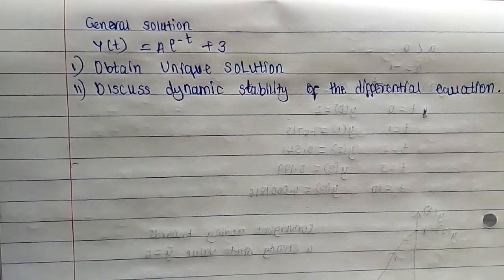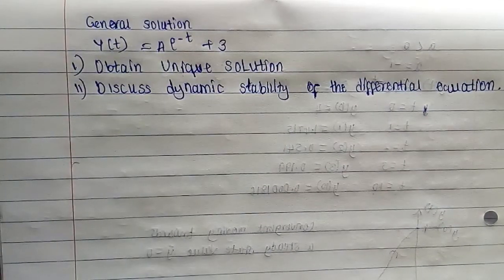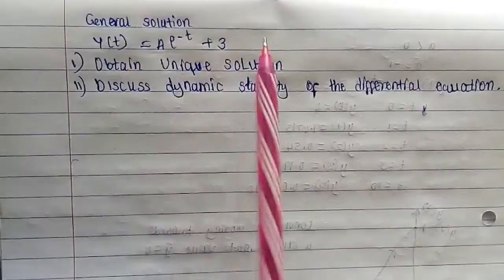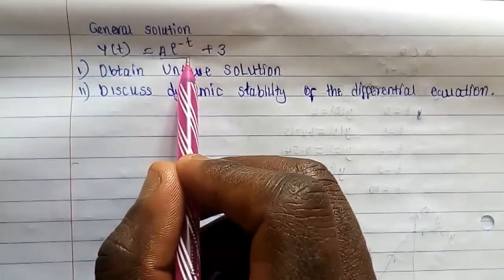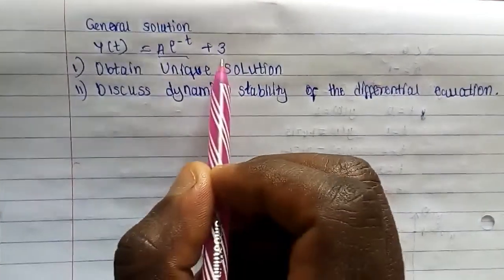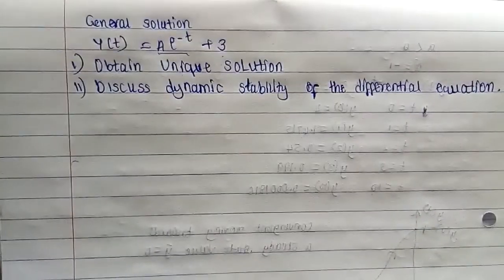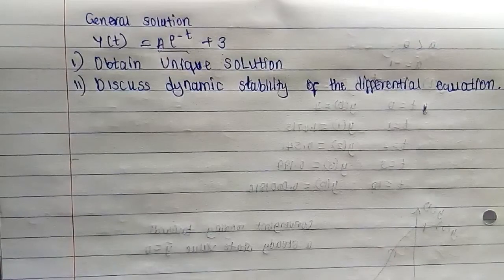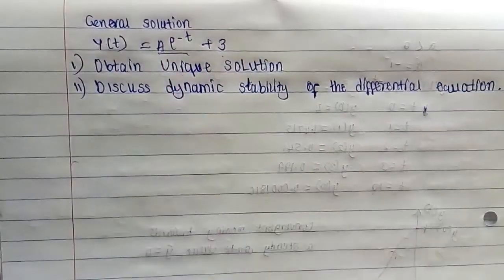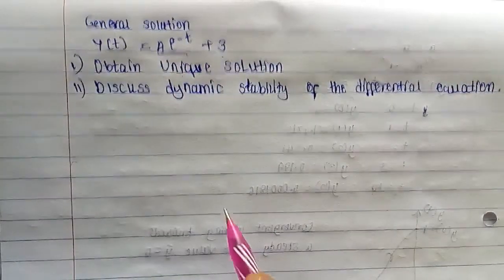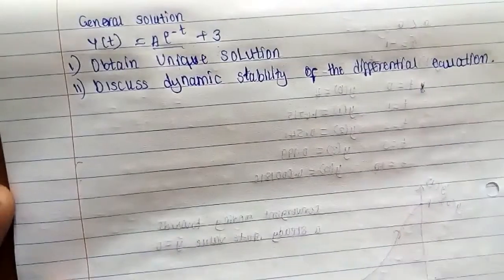Today we are going to discuss the dynamic stability of a differential equation. Previously we covered unique solutions: to obtain a general solution you add the homogeneous solution and the particular solution. To obtain a unique solution you need to find the value of the arbitrary constant and replace it in the general solution.